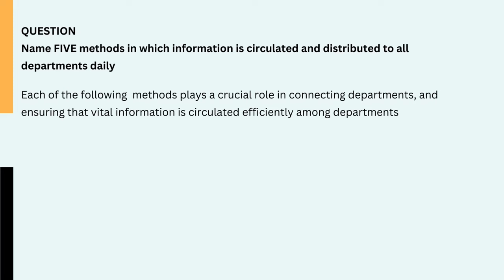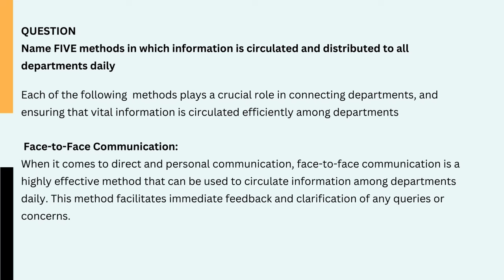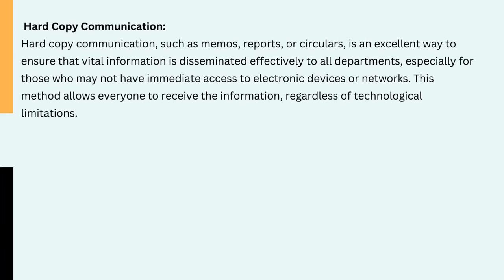Question: Name five methods in which information is circulated and distributed to all departments daily. Each of the following methods plays a crucial role in connecting departments and ensuring that vital information is circulated efficiently. 1. Face-to-face communication. When it comes to direct and personal communication, face-to-face communication is a highly effective method that can be used to circulate information among departments daily. This method facilitates immediate feedback and clarification of any queries or concerns. 2. Hard-copy communication. Hard-copy communication, such as memos, reports or circulars, is an excellent way to ensure that vital information is disseminated effectively to all departments, especially for those who may not have immediate access to electronic devices or networks.